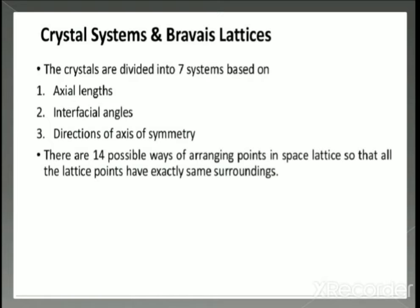The crystal systems and the Bravais lattices — there are only 14 possible three-dimensional lattices, called the Bravais lattices. The characteristic features of crystal lattices are: each point in a lattice is called a lattice point or lattice site; each point represents one constituent particle, which may be an atom, molecule, or ion; and lattice points are joined by straight lines to bring out the geometry of the lattice. Crystals are divided into seven systems based on axial lengths, inter-facial angles, and direction of axes.